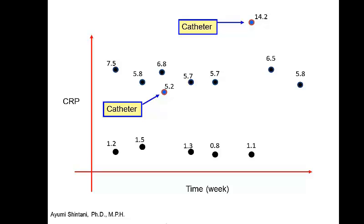Can we analyze this data? We know there are two patients and observations are repeated daily — catheter versus non-catheter. With linear regression, there is no way to tell the model what the patient ID is. So if you go ahead and use linear regression, you are analyzing data without knowing whose CRP belongs to which patient.